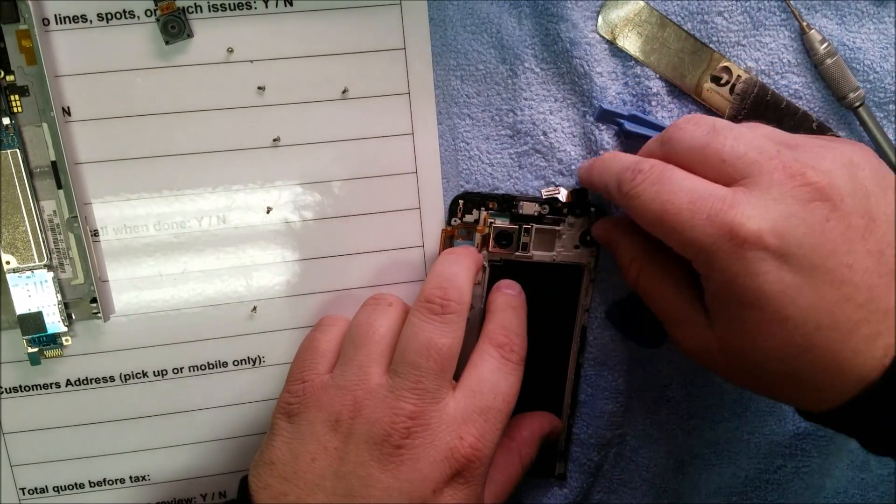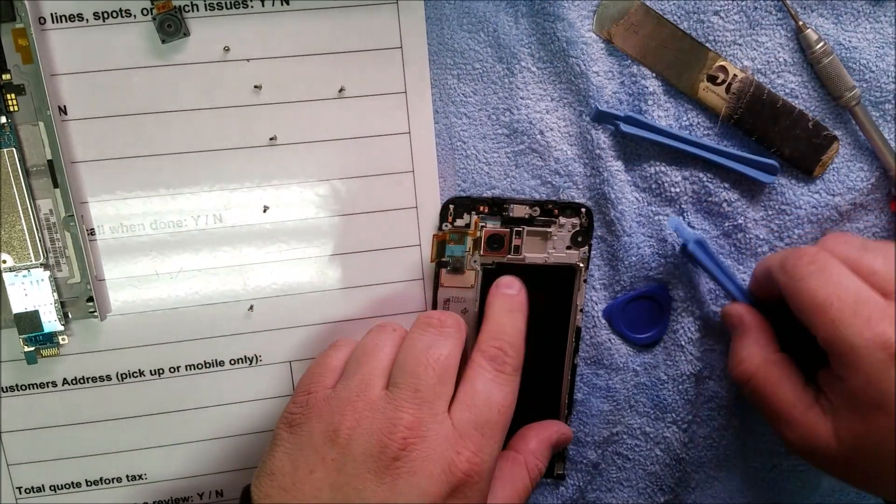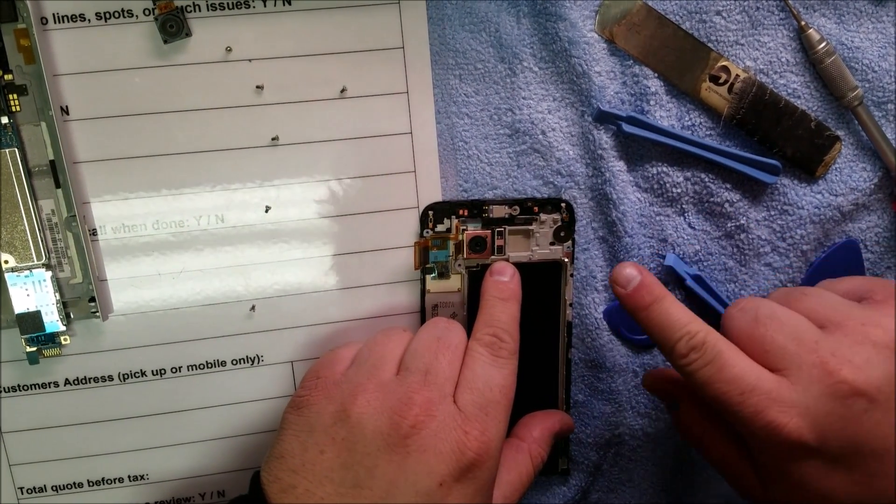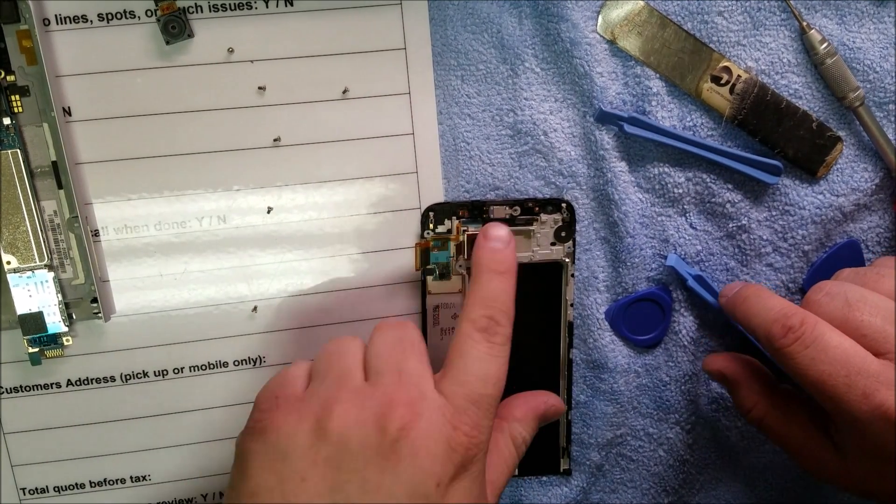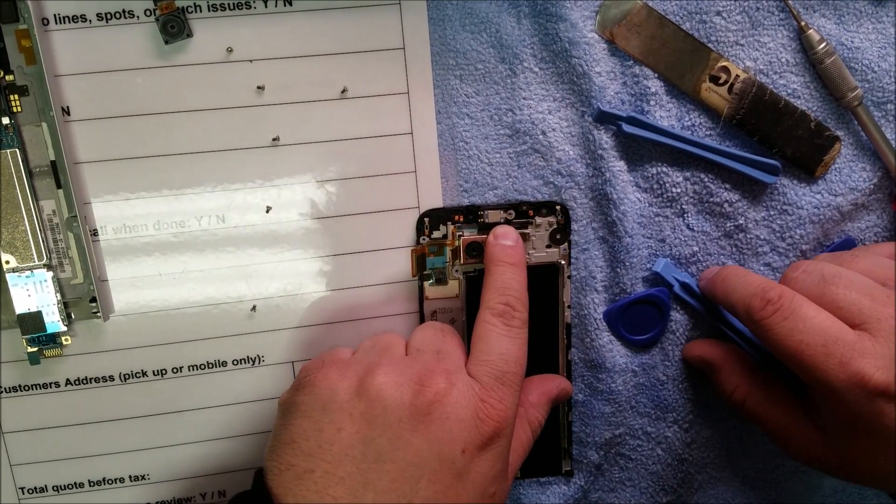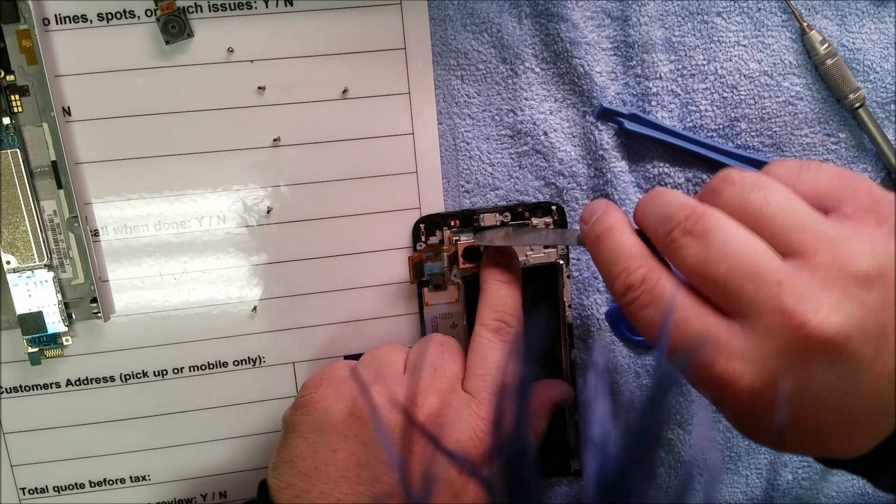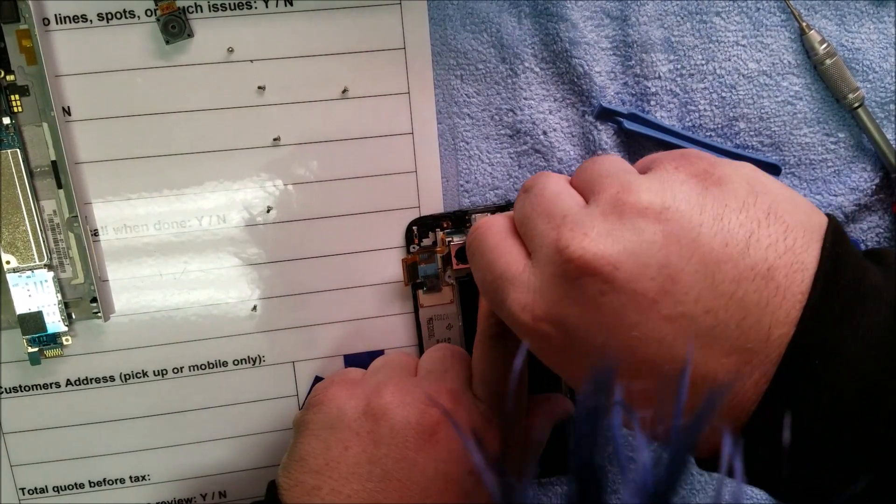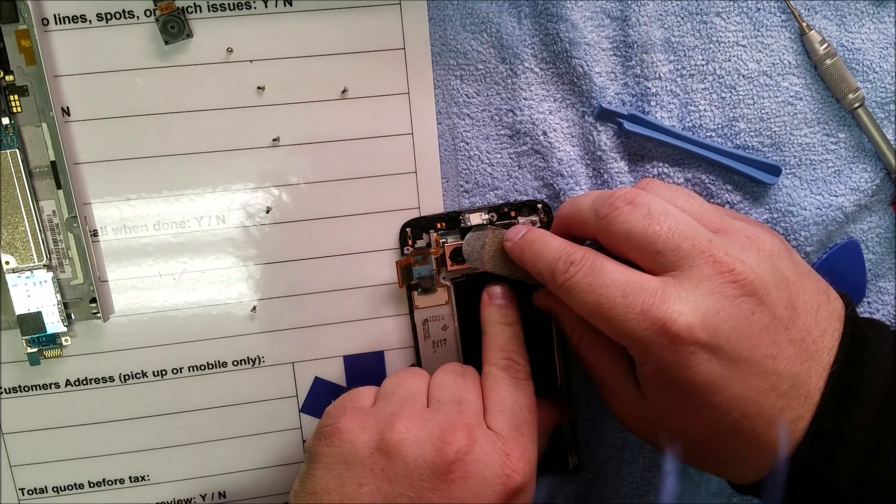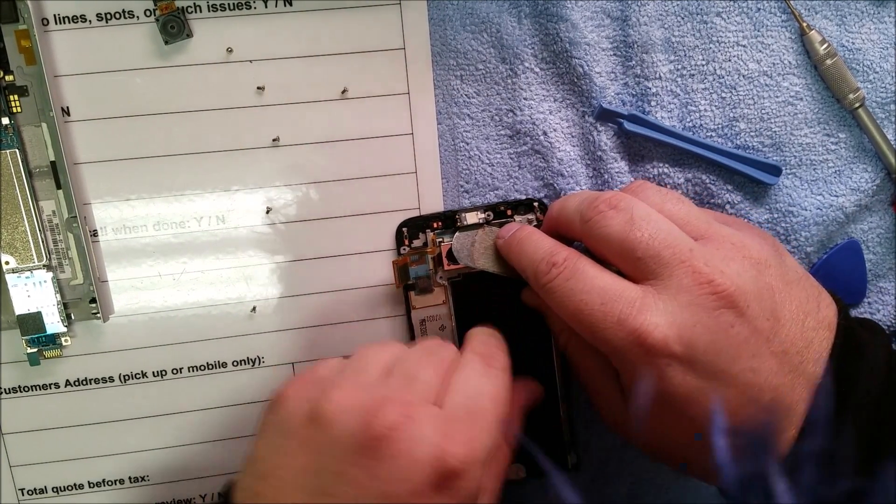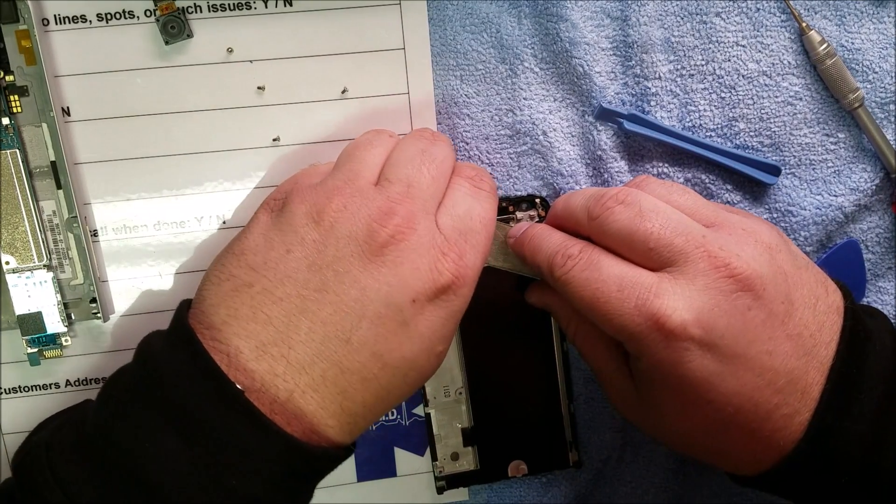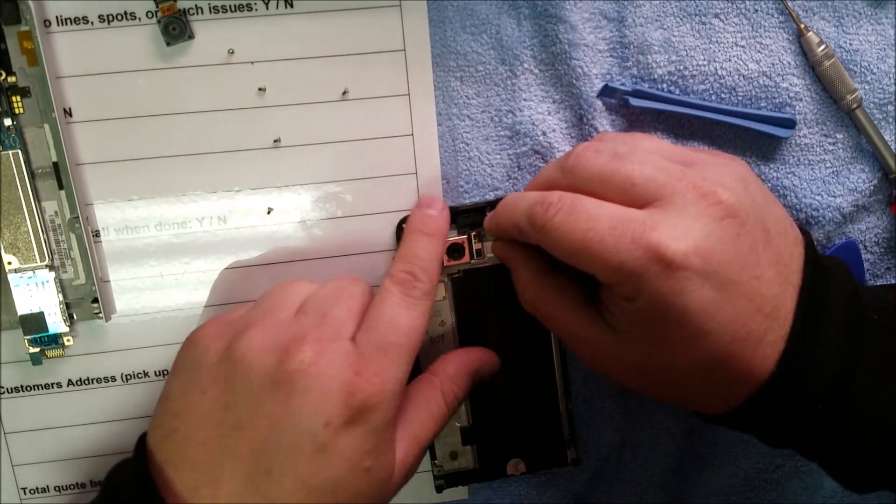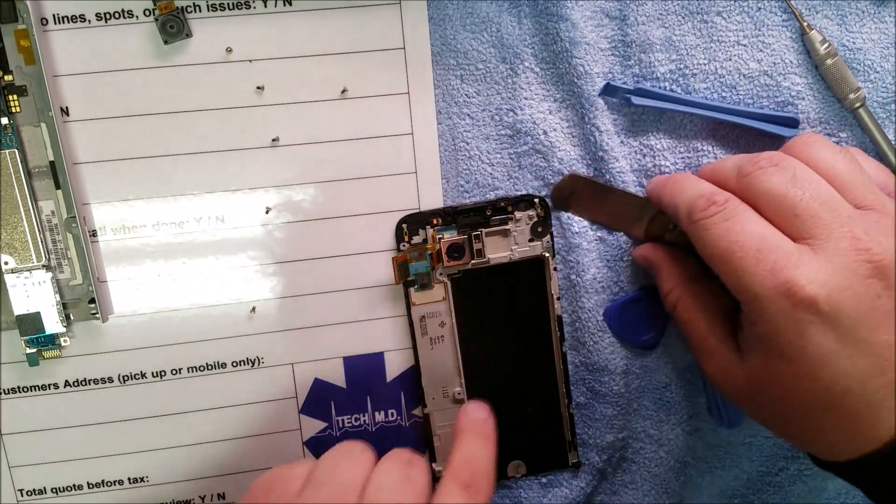And front camera just rolls right out. The speakers are always evil removing those. You got to be careful sometimes they separate. If you do want to remove them, I would suggest using heat. A really good pry tool. So this one connects actually at right there to the motherboard. Two connectors.